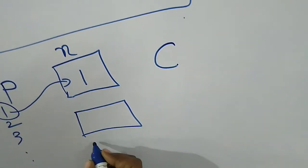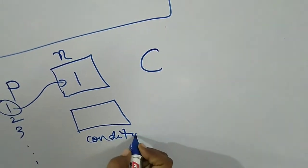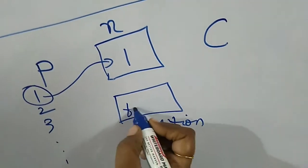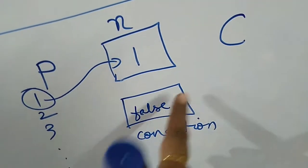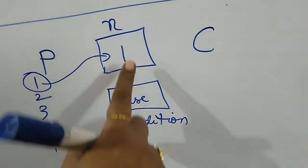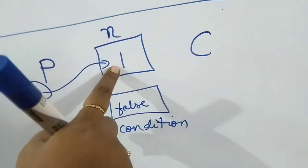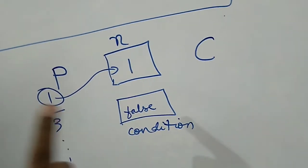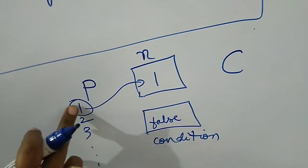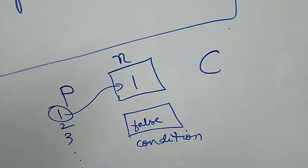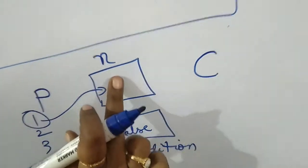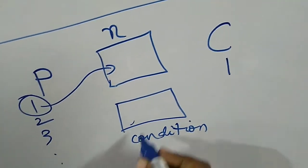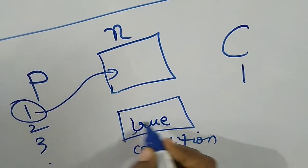To check whether the consumer has consumed the value or not, there is a condition check. Initially it will be false because the consumer hasn't taken the value yet. Once the consumer consumes the value in n, this condition becomes true. Say the producer has produced one and put it inside n, and the consumer has taken that one — as soon as the consumer takes it, the condition is made true.